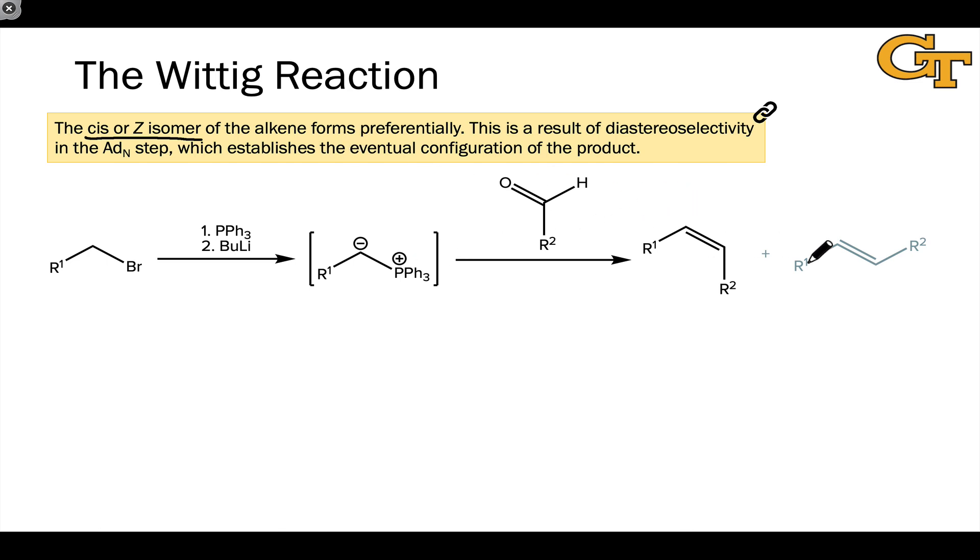In other words, when we run a reaction where we could end up with an alkene in which the larger groups or the higher priority groups are on the same side of the double bond or on opposite sides, the product in which the R groups are on the same side of the double bond is the favored or major product. This is the cis or Z isomer.